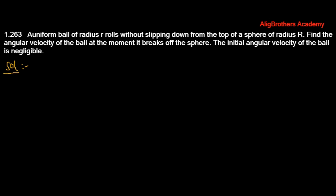Hey guys, I am going to solve question number 1.263 of Irodov. In this question, we have given that a uniform ball of radius r rolls without slipping down from the top of a sphere of radius R. We have to calculate the angular velocity of the ball at the moment it breaks off the sphere, and the initial angular velocity of the ball is assumed to be zero.